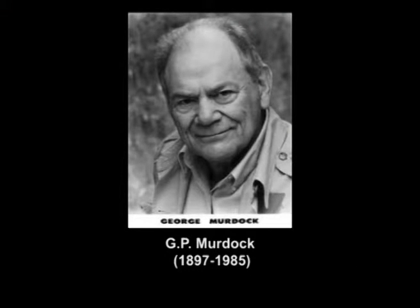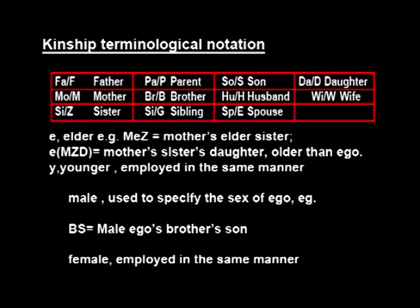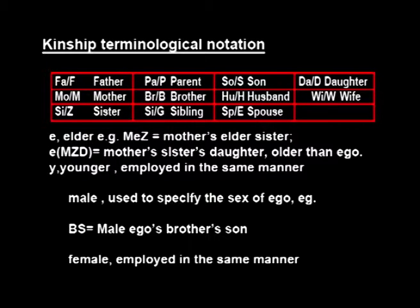Murdoch introduced a set of two-letter abbreviations; another single-letter set developed by Rhodes Livingstone is also gaining acceptance. The notations are: Fa or F for father, Pa or P for parent, So or S for son, Da or D for daughter, Mo or M for mother, Br or B for brother, Hu or H for husband, Wi or W for wife, Si or Z for sister, Sb or Sib for sibling, and Sp or E for spouse.